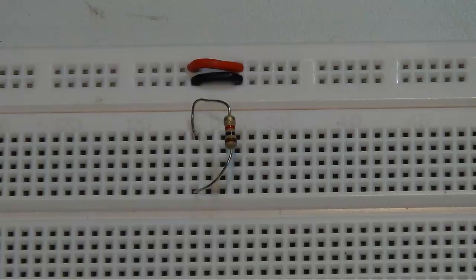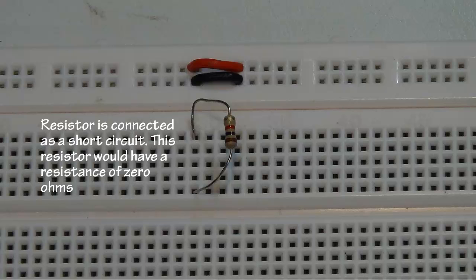This is an example of how not to connect a resistor in the project board. Both leads of this resistor are in the same common group of five holes, therefore this resistor is now short circuit and will have a total resistance of zero ohms regardless of the resistor value.